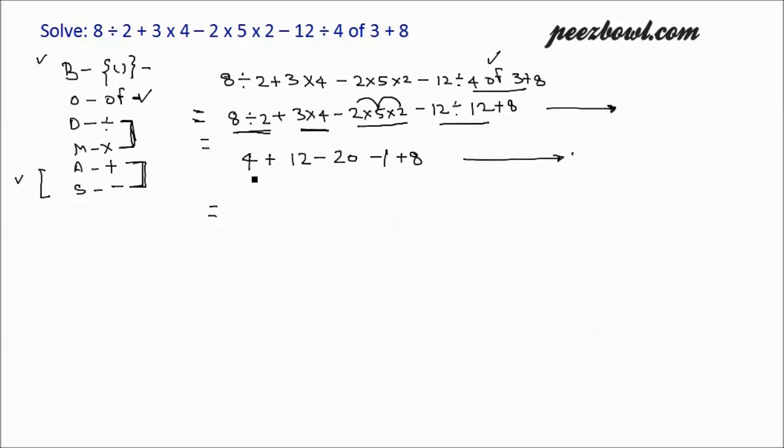In this case, let us add 4 and 12; that is 16. Then we have minus 20 minus 1 plus 8. 16 minus 20 is minus 4, minus 1 plus 8. We are going left to right. Equal to minus 4 minus 1 is minus 5 plus 8. Again we have gone left to right.